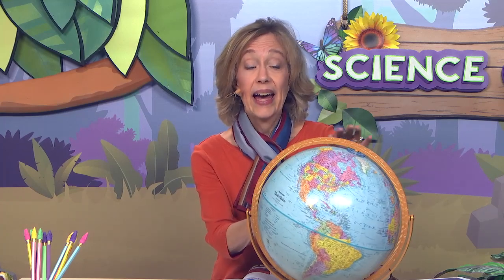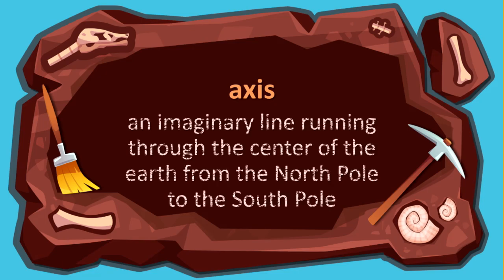The Earth rotates, and it rotates on its axis. So what is the axis? The axis is an imaginary line running through the center of the Earth from the North Pole to the South Pole. Something very special happens as the Earth rotates: the Earth's rotation makes it so that each part of the Earth has daytime and nighttime.